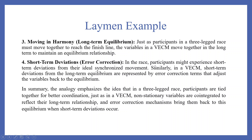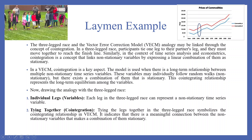Just as participants in the three-legged race move together in the long term to maintain an equilibrium, in a VECM the variables move together to maintain a long-term equilibrium relationship. Short-term deviations occur — in the race, participants might experience short-term deviations from their ideal synchronized movement. Similarly, in a VECM, short-term deviations from the long-term equilibrium are represented by error correction terms that adjust the variables back to equilibrium. When any participant moves out of the white line, the other participant tries to pull them back — this correction is what one participant does to another, and the same happens in the series.